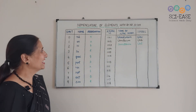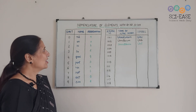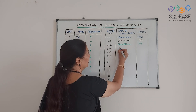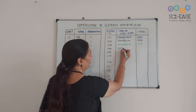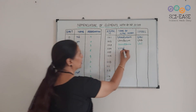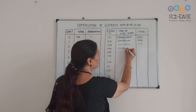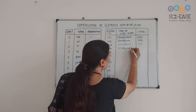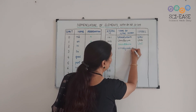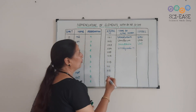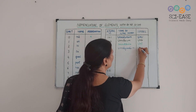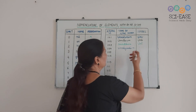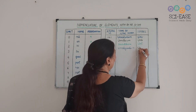For element 104: digits are 1, 0, 4 — giving 'un', 'nil', 'quad', with suffix '-ium': 'Unnilquadium'. The symbol is the first letter of each root: U, n, q — giving 'Unq'.